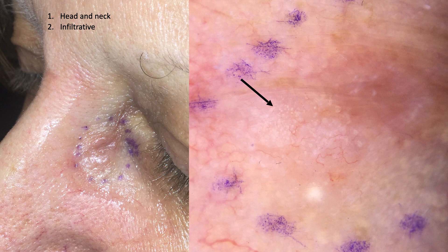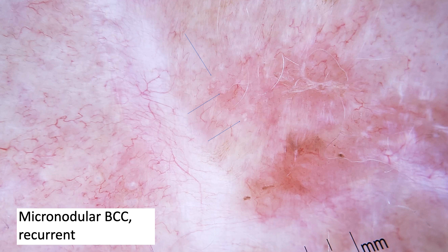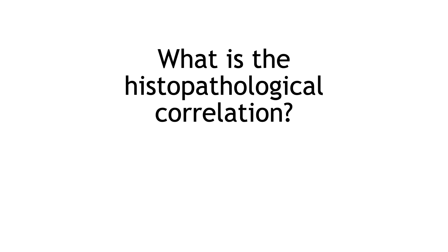This is a very interesting case — it was referred to us as a superficial BCC for topical treatment or cryotherapy. On dermoscopy we saw shiny white blotches and strands, arborizing vessels, short fine telangiectasias, but also MAYG globules. On biopsy this was a micronodular BCC, and this patient underwent Mohs surgery.